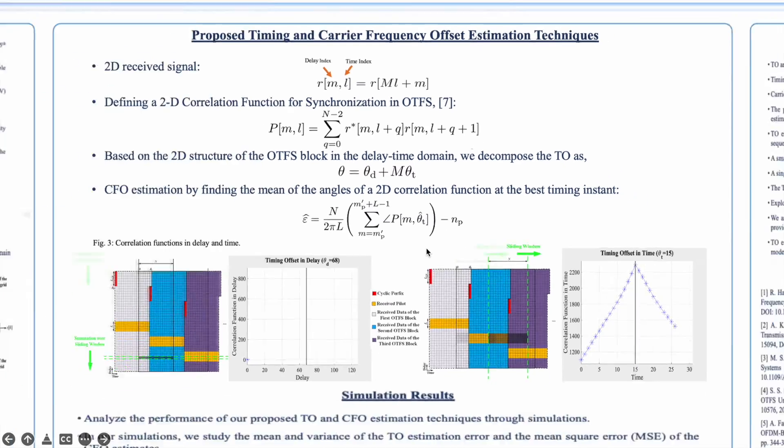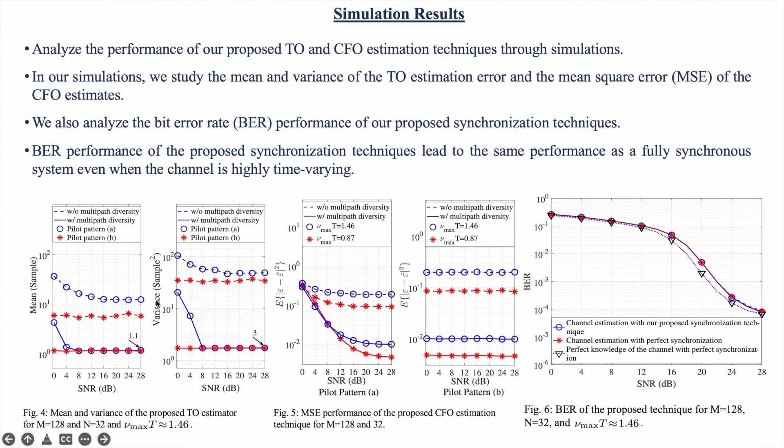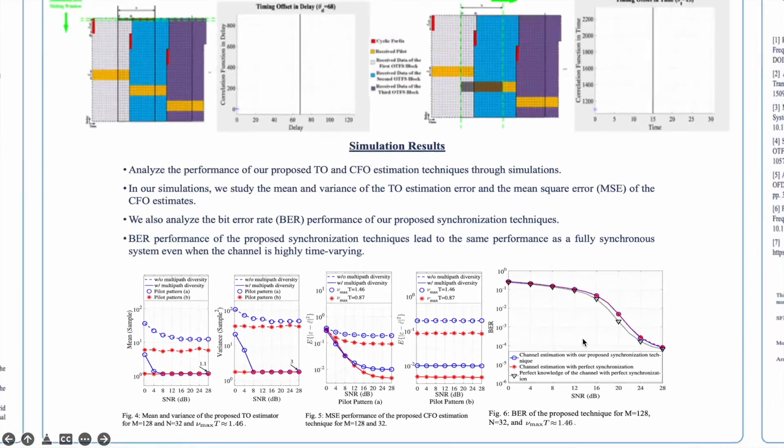And then after that, we analyze the performance of our system by showing the mean and variance of the error for timing offset and MSE or mean square error of the CFO or carrier frequency offset. And then the bit error rate performance of the system leads to the same performance as the fully synchronous system.